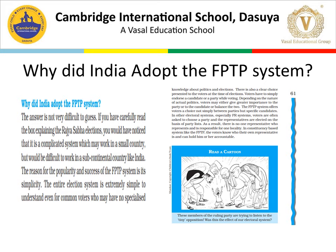The FPTP system offers voters a choice not simply between parties but between candidates also. In PR, voters are often asked to choose the party, not the candidate, but in FPTP we look at the candidate. As a result, there is a representative who is responsible for one locality, making the system accountable. The cartoon here shows members of the ruling party trying to listen to even the tiniest opposition concerns, so that the opposition may not criticize the ruling party in future and provisions people don't like can be modified. This is why the election system works well.